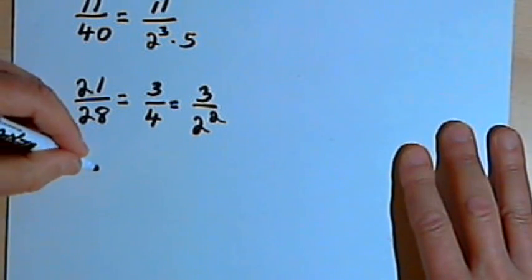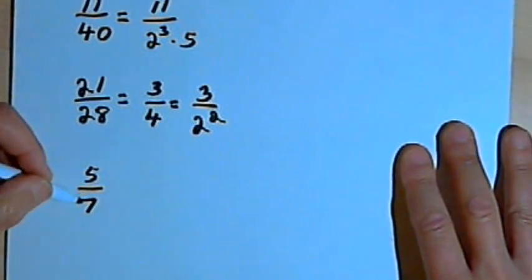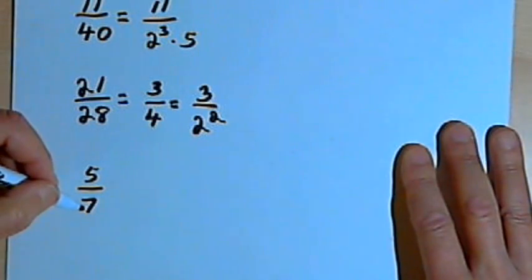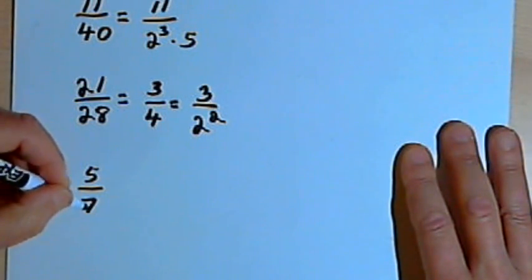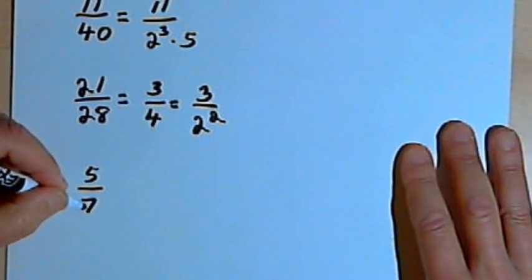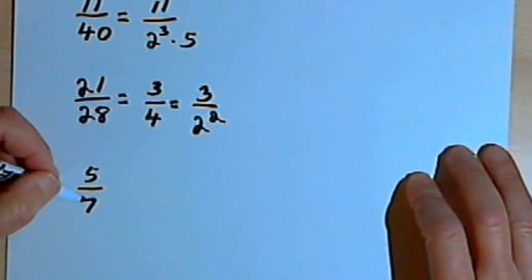If I have 5 over 7, this is already reduced. 7 is a prime number. I can't factor it anymore. Since it's a 7, and I haven't got 2s or 5s, I've got a number other than 2 or 5, this will end up being a repeating decimal.